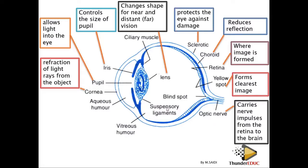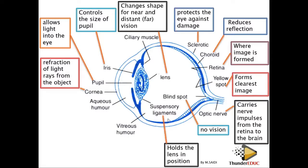The blind spot has no vision because there are no sensory cells there to detect light. Whenever light falls on the blind spot, you are not able to see it.